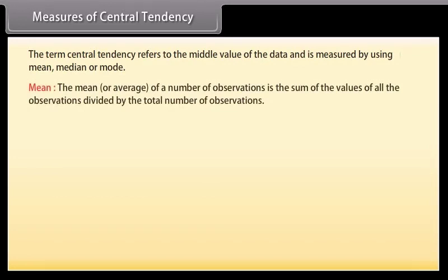Mean. The mean or average of a number of observations is the sum of the values of all the observations divided by the total number of observations. It is denoted by this symbol, read as x bar.